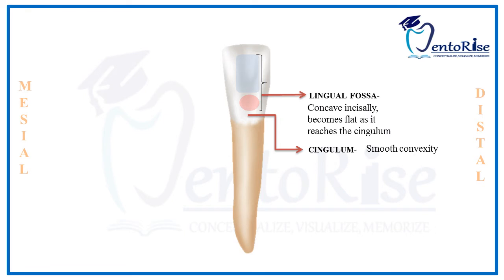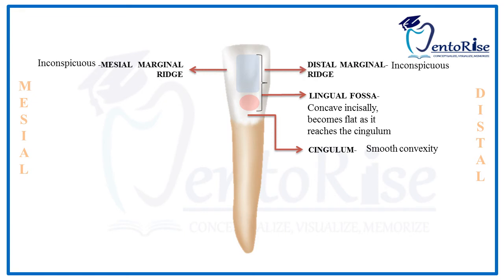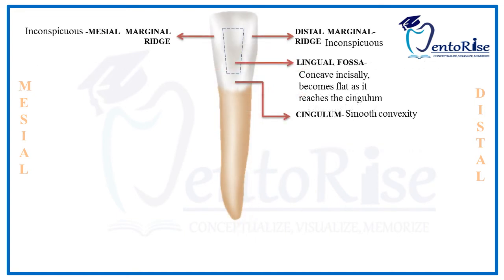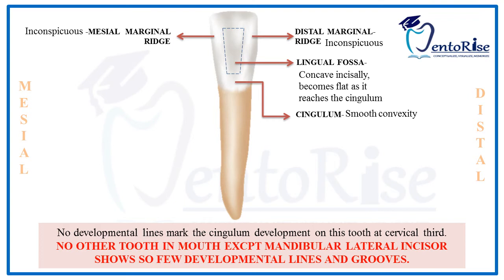The lingual fossa of the permanent maxillary central incisor was concave, but the concavity was more pronounced in the maxillary lateral incisor. In the permanent mandibular central incisor, both the mesial and distal marginal ridges are inconspicuous, in contrast to the maxillary incisors where the marginal ridges were well observed. A characteristic feature is that no developmental lines mark the cingulum development on this tooth, meaning developmental grooves are absent in the cingulum area — a feature shared only with the mandibular lateral incisor.